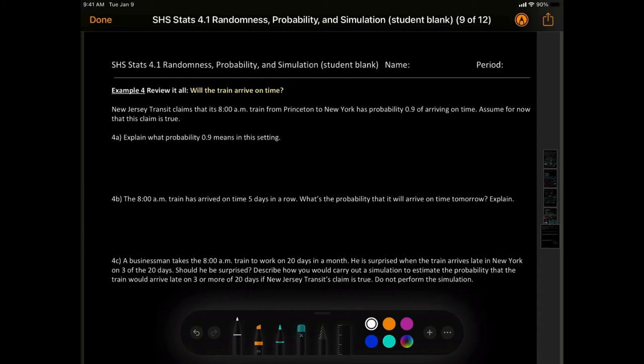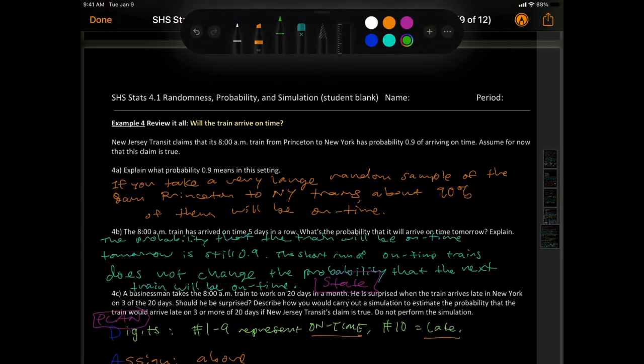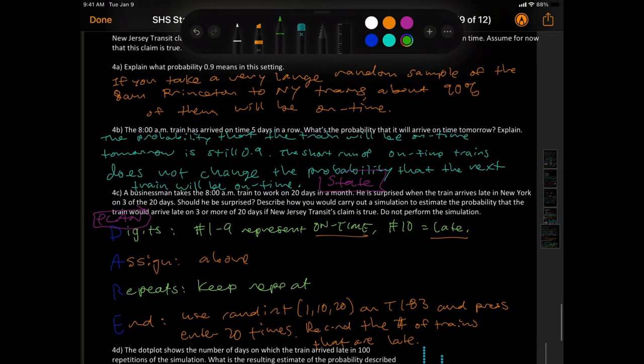Okay. Next page. Example number four. You do it all and then press play and I'll have all the answers and I'll explain it. Question number four. New Jersey Transit claims that its 8 a.m. train from Princeton to New York has a probability of 0.9 of arriving on time. Assume for now that this claim is true. Explain what probability 0.9 means in this setting. If you take a very large random sample of the 8 a.m. Princeton to New York trains, about 90% of them will be on time. Okay. 4B. The 8 a.m. train has arrived on time five days in a row. What's the probability that it will arrive on time, I'm going to highlight this one, tomorrow. The next one. Explain. The probability that the train will be on time tomorrow is still 0.9. The short run of on time trains does not change the probability that the next train will be on time.